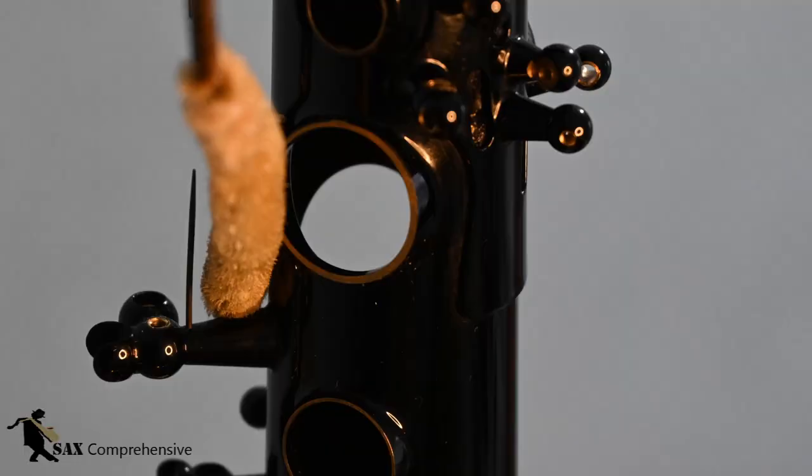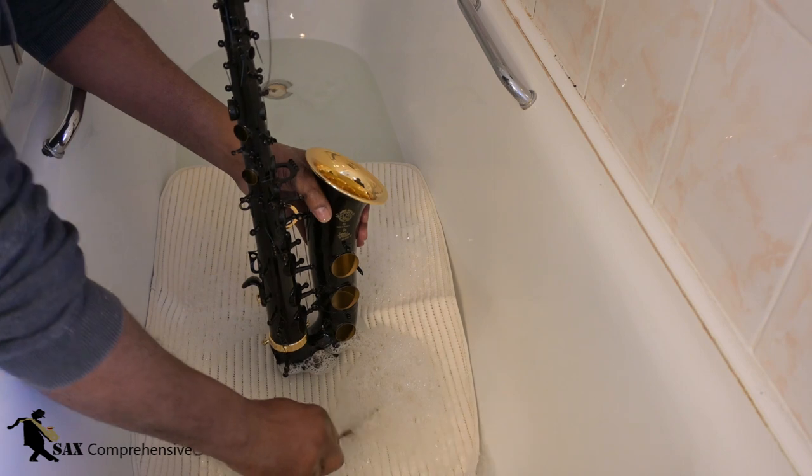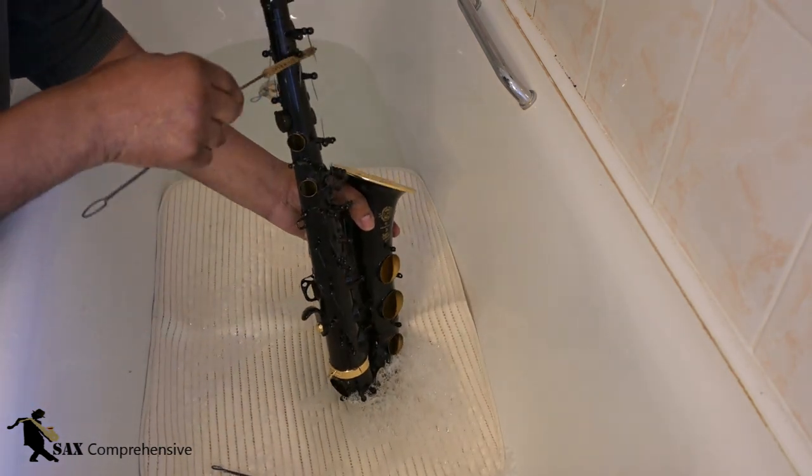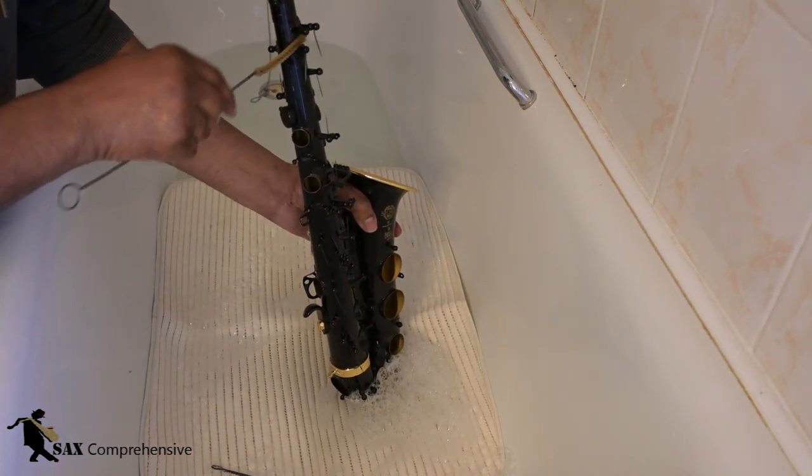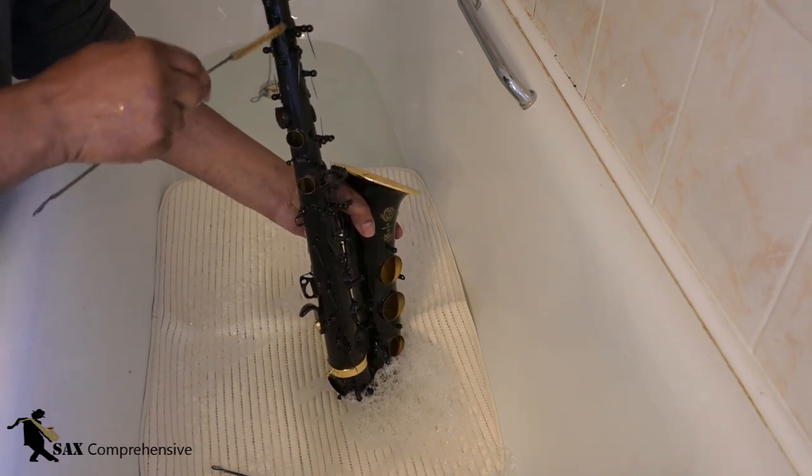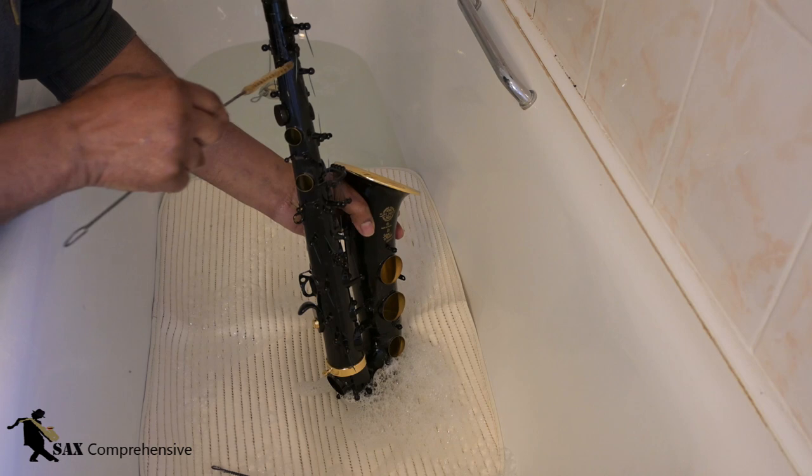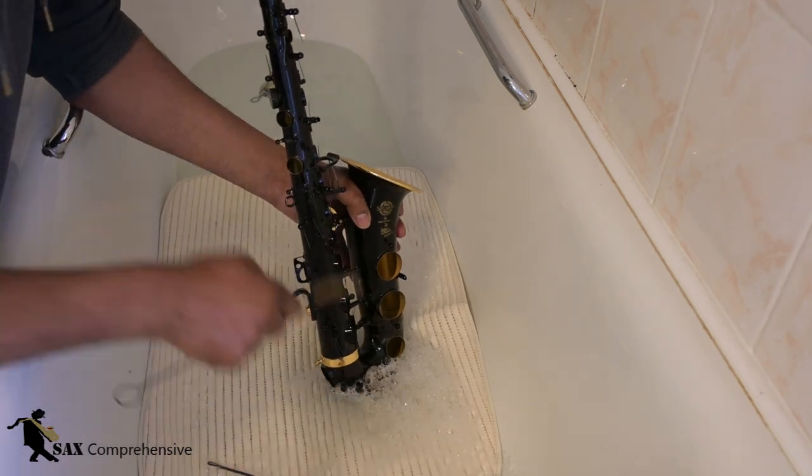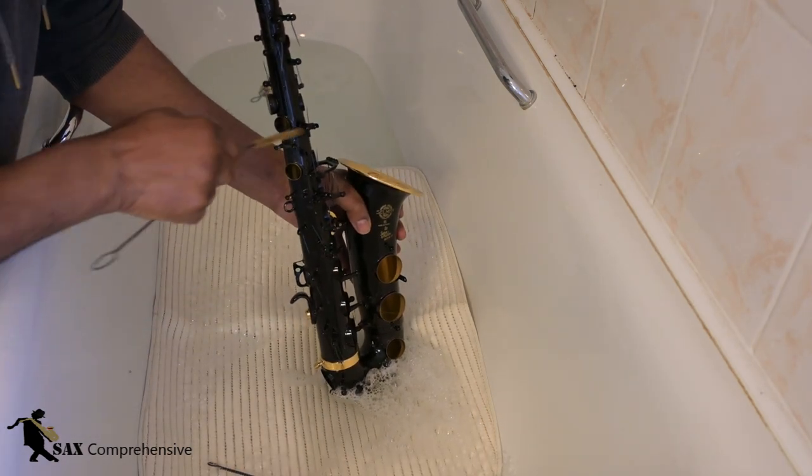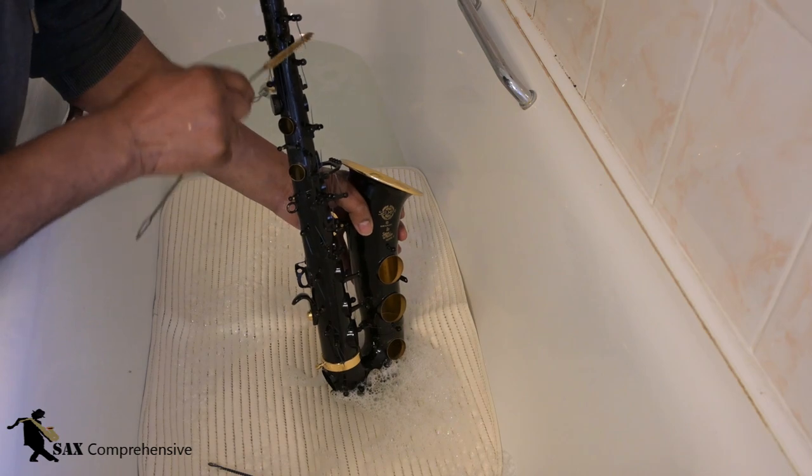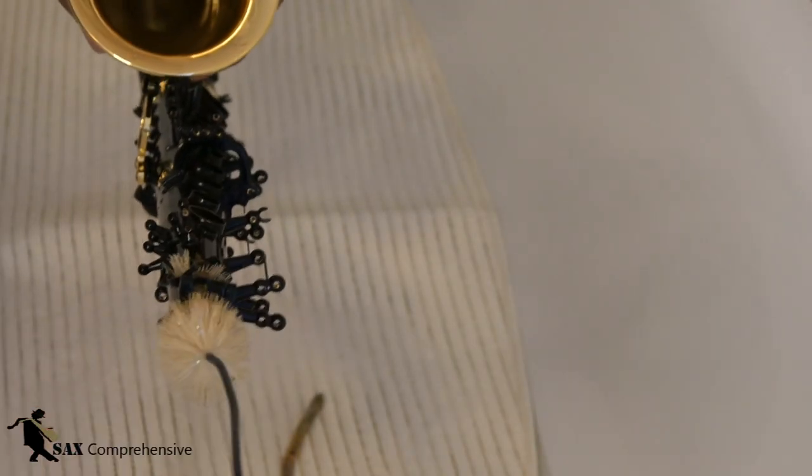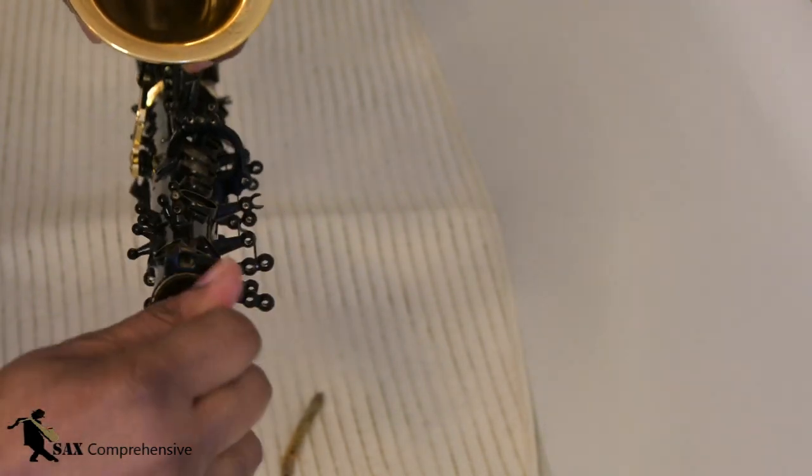Then with a small brush that passes under the springs we can clean the saxophone. We do not want to hit the springs with the brush.